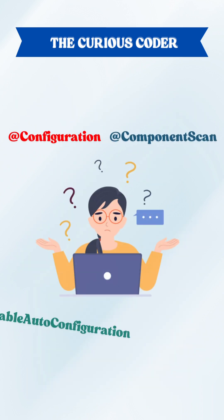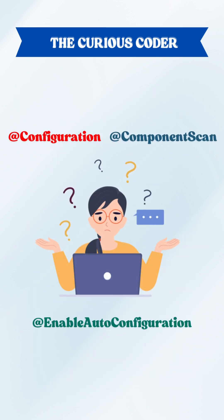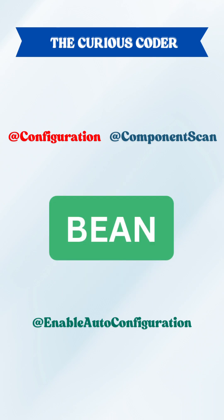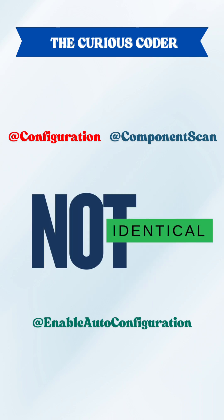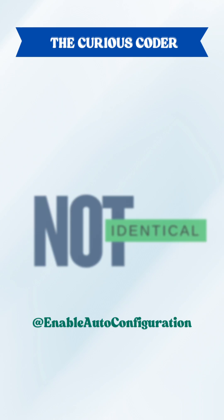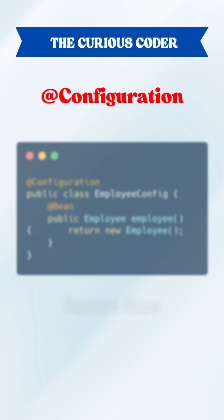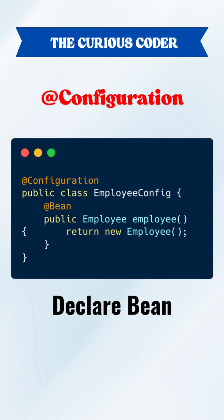At a glance, these three annotations can be confusing — they all seem related to beans somehow. But in reality, all of them are quite different. @Configuration, when put on a class, allows you to manually declare beans inside that class using @Bean methods.